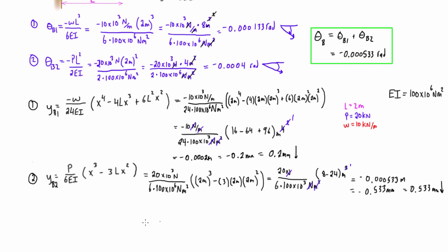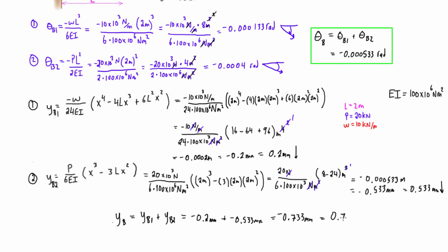Now we sum the two deflections, just as we did for the slopes. The actual deflection at B, y_B, equals y_B1 plus y_B2, which is negative 0.2 millimeters plus negative 0.533 millimeters, giving a total deflection of negative 0.733 millimeters, or 0.733 millimeters in the downward direction.